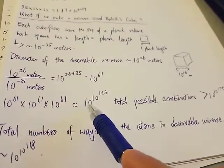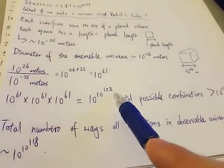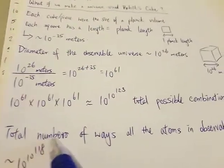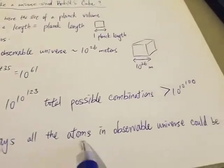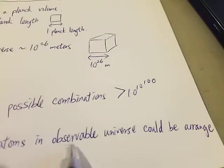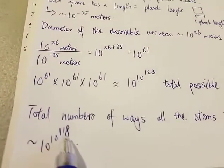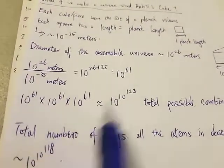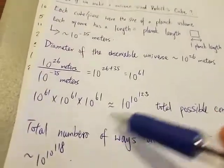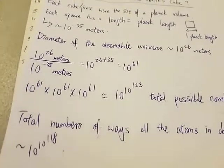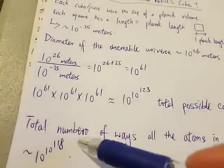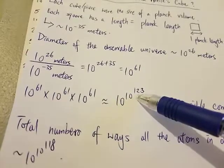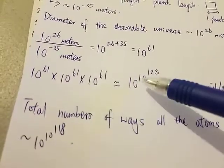And one interesting note is that this number is kind of close to the total number of ways you can arrange all the atoms in our observable universe. And that number is around 10 to the 10 to the 118. So this number is bigger than that, but it's not too far off in terms of size. Relatively, of course, this number is way bigger than this. But to our eyes, close enough.